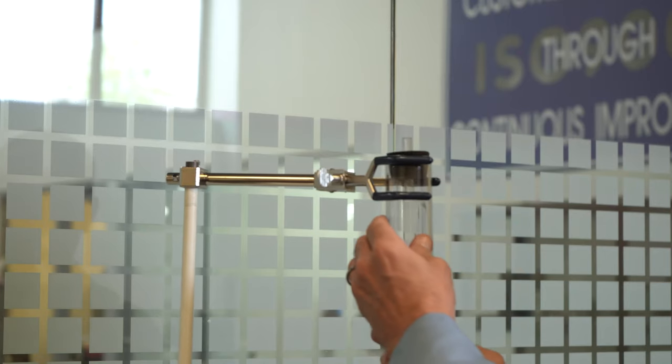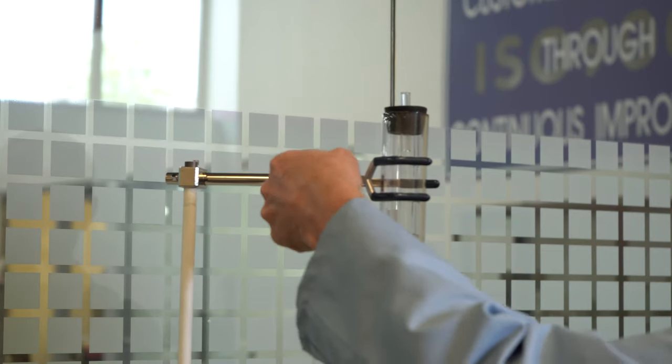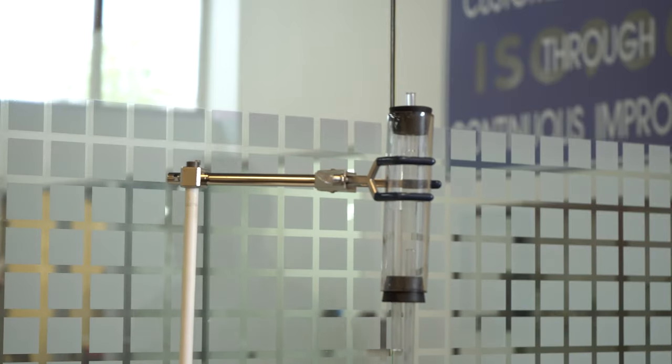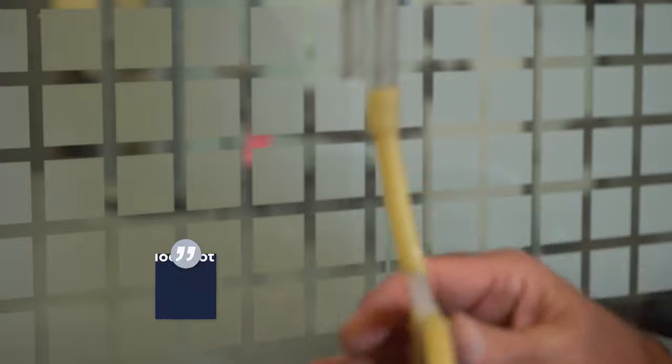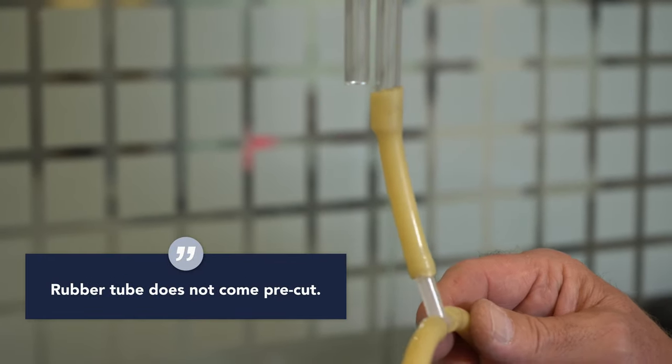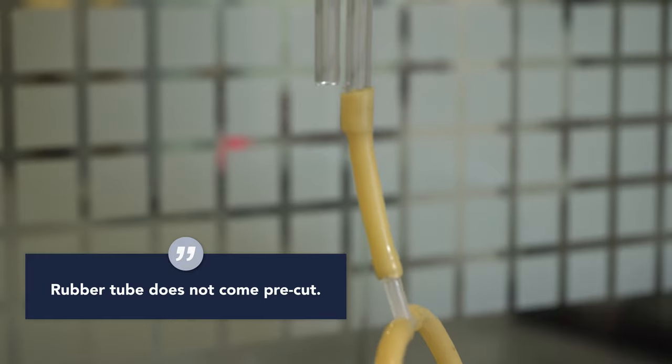Step 5. Insert the flow meter assembly into the three prong clamp and tighten so that it is secure. The single tube should be facing the top for airflow. Step 6. Use the three inch piece of rubber tube and attach it to the lower outlet in the flow meter assembly.